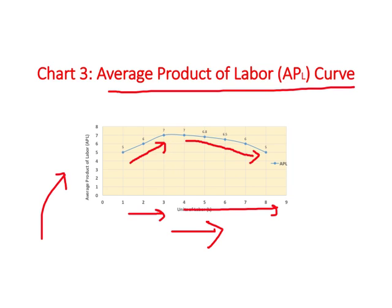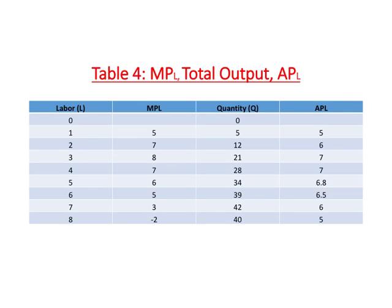Looking at the APL curve, as we increase the number of workers, initially average product of labor increases, it hits a maximum, and as we add more workers the average product of labor starts to decline. In terms of shape, it is pretty much like the MPL curve — these kinds of shapes are simply referred to as inverted U or inverted V. So why is the APL curve shaped like an inverted U or inverted V? To understand that, let us look at the table.